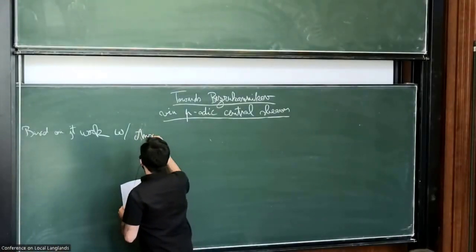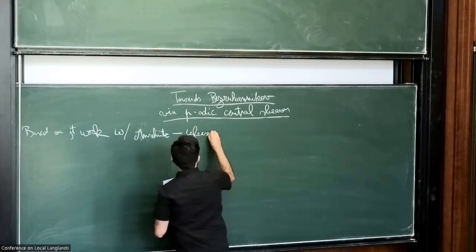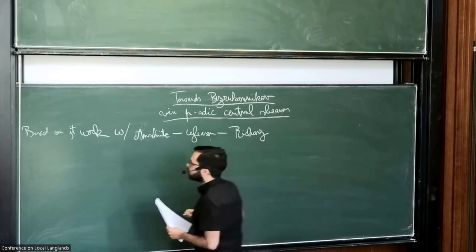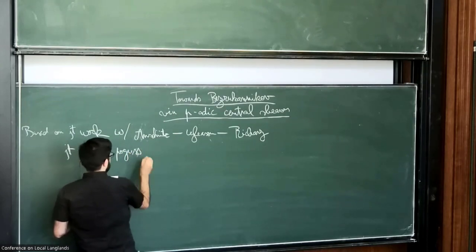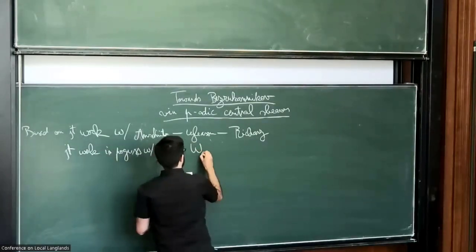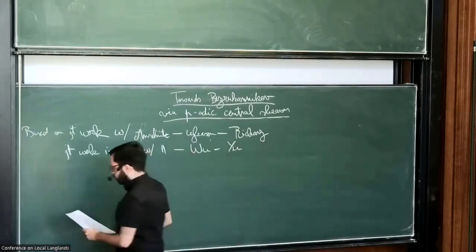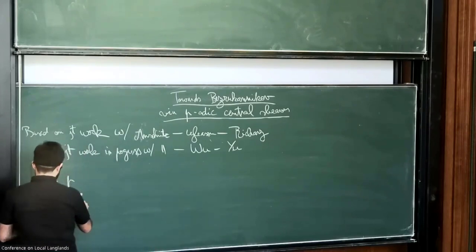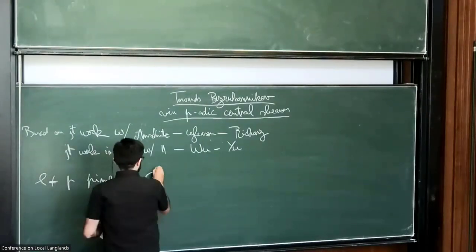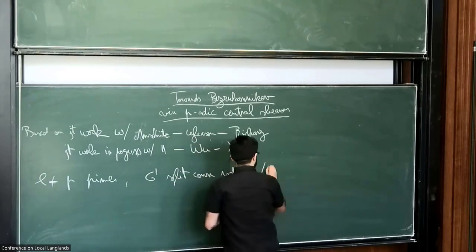Okay, so what I'm going to talk about is based on some one-year-old work with Johannes, Ian, and Tina, and there's now some joint work in progress with Johannes, Gio Wu, and GZU. Before I start with our actual setup, let me explain what Bazio-Carnico is all about. I'll have to fix two primes different from p. For now, let G prime be a split connected reductive group over fp bar.